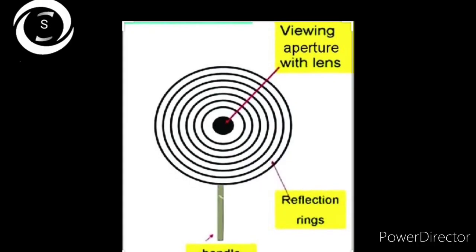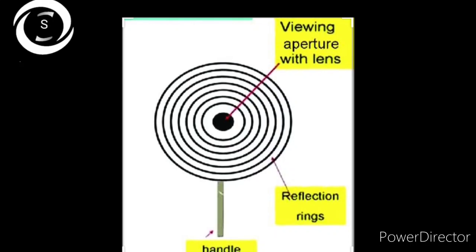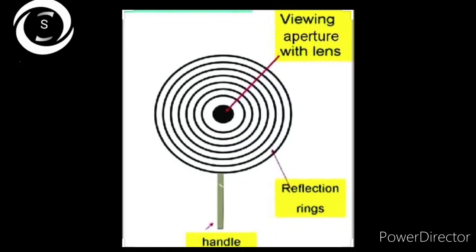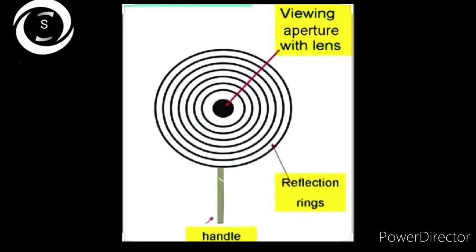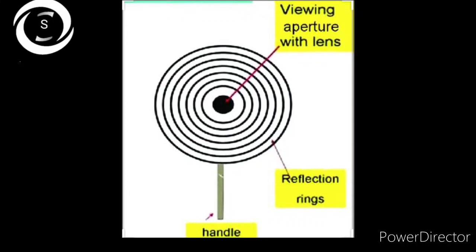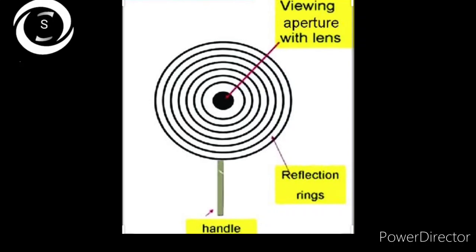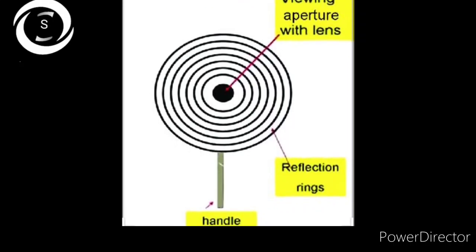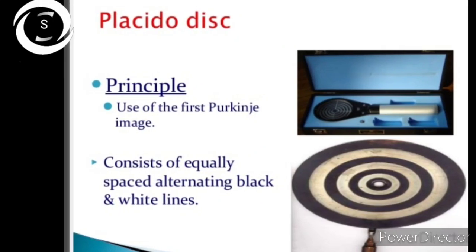Corneal anterior surface acts as a convex mirror, so corneal topography is based on the principle of placido disc. Placido disc consists of equally spaced alternating black and white lines with a handle and central aperture through which the observer sees the image produced by the corneal reflection.